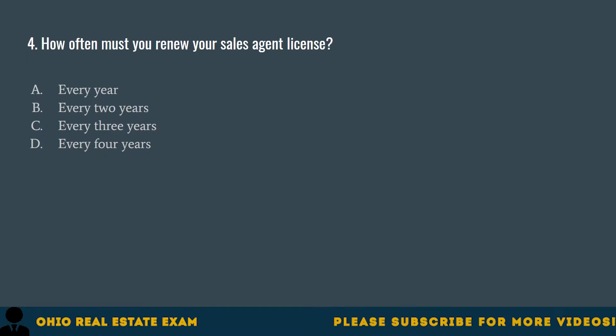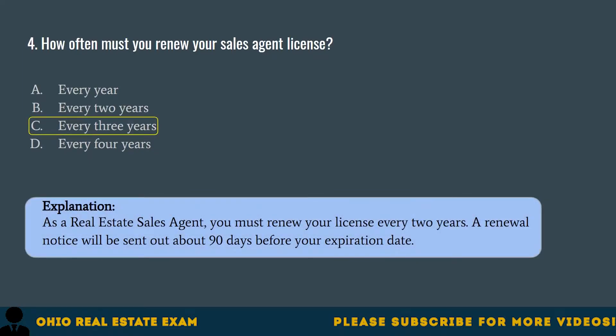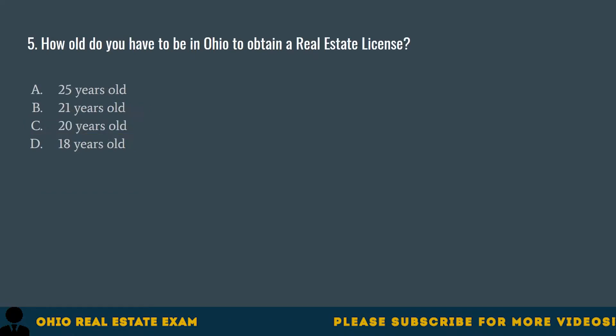Question 4. How often must you renew your sales agent license? A. Every year. B. Every two years. C. Every three years. D. Every four years. The correct answer is C. Every three years. As a real estate sales agent, you must renew your license every three years. A renewal notice will be sent out about 90 days before your expiration date.